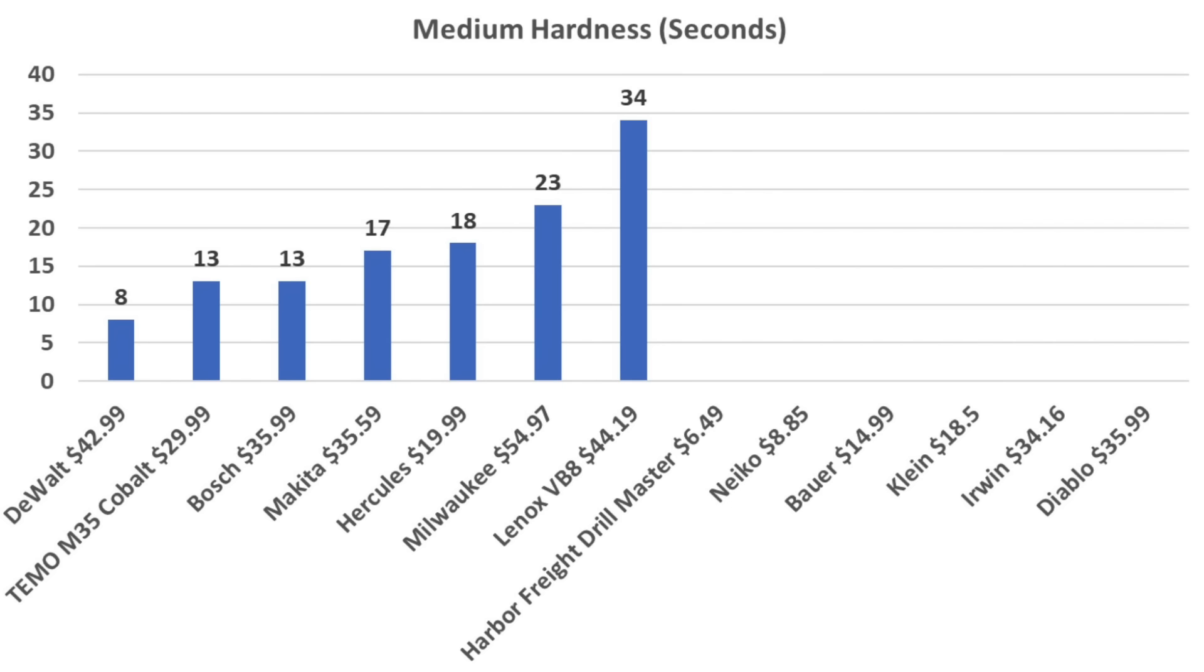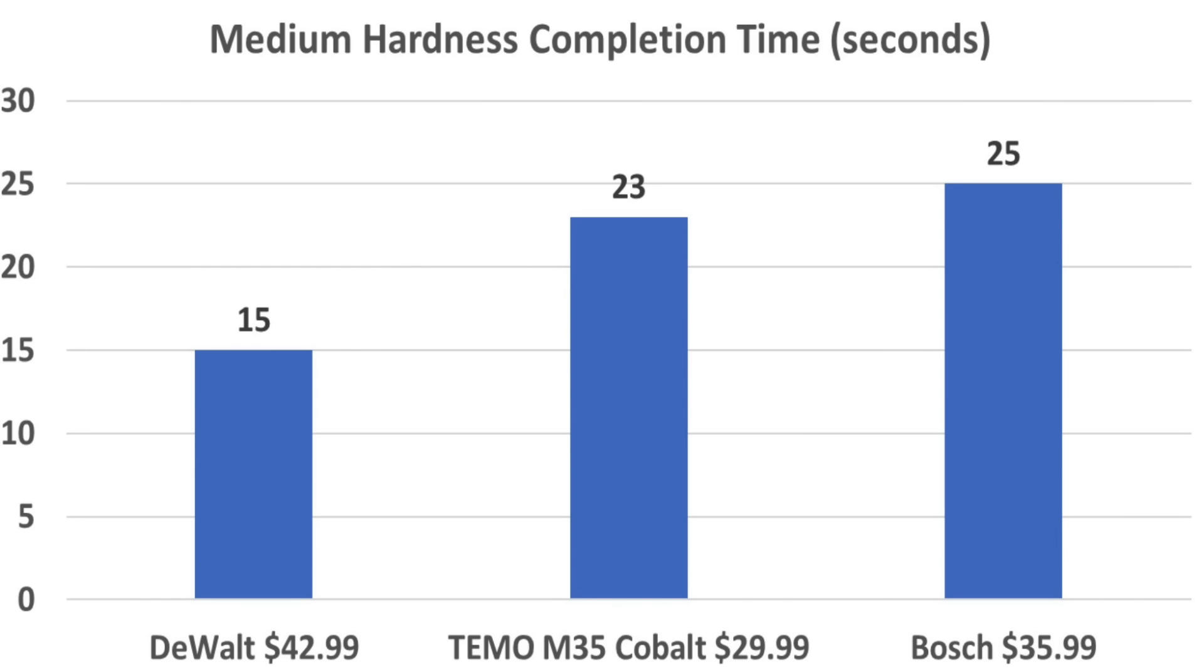Once again, the DeWalt was the fastest at breaking through the steel at only 8 seconds. The Teemo and the Bosch tied for second at 13 seconds, the Makita 17 seconds, Hercules 18, Milwaukee 23, and Lennox 34. All seven brands will advance to the next round of competition. Only three brands completely bored through the medium hardness steel, making a 7/8 inch hole: the DeWalt at 15 seconds, Teemo 23, and Bosch Turbo 25.